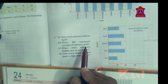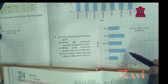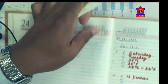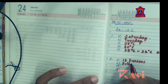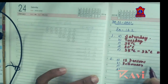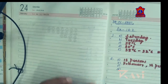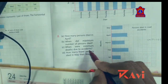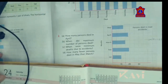When did the maximum number of persons die? It is in February — 19 persons died in February. When were the minimum deaths due to accidents? Minimum death was in January, so write January.